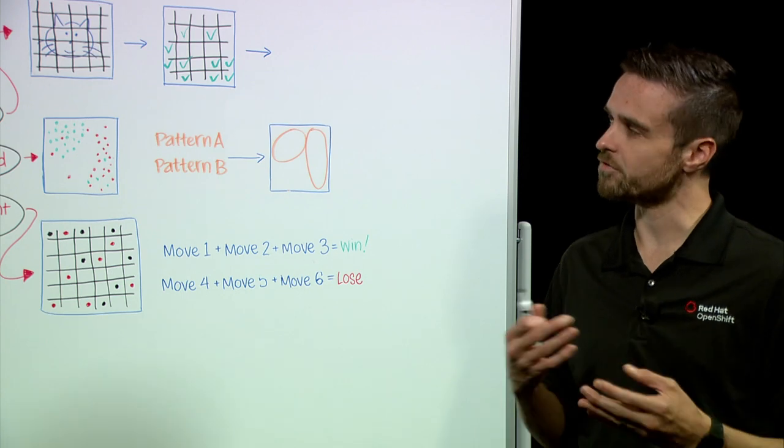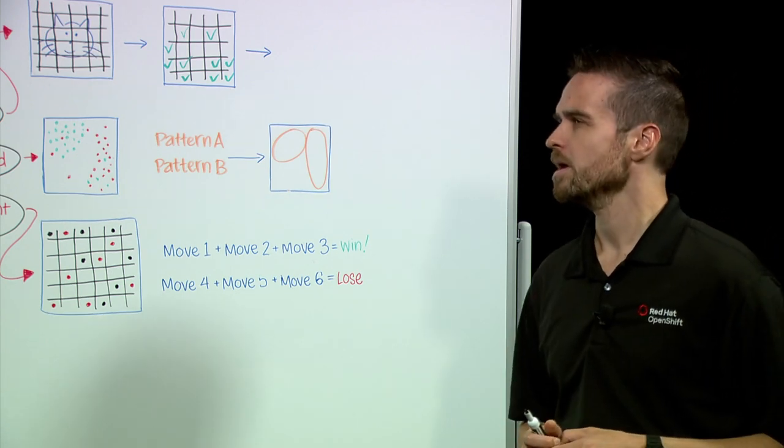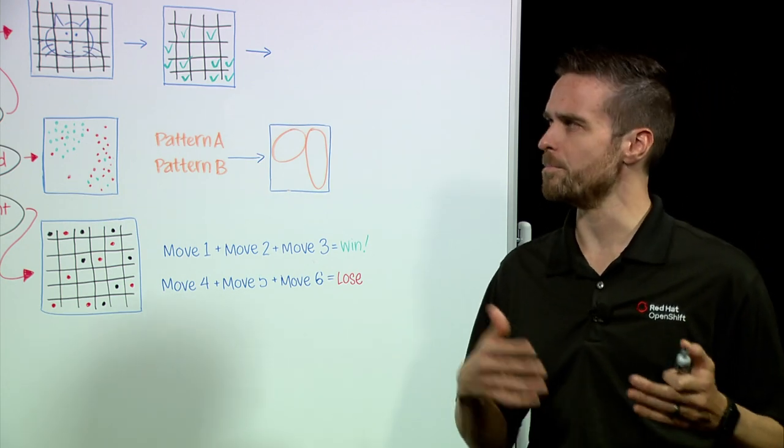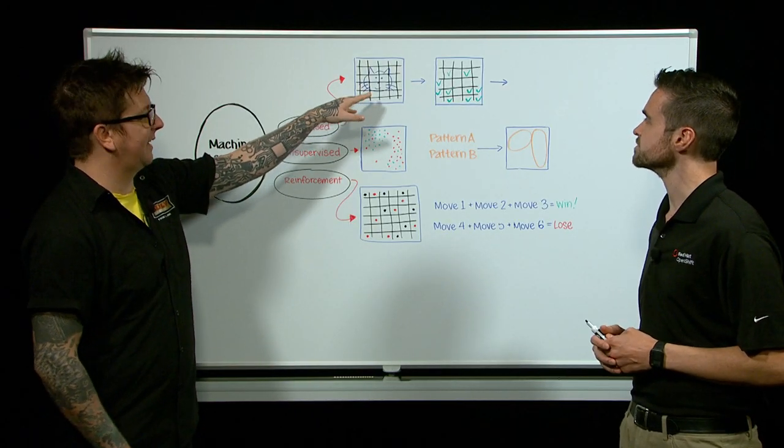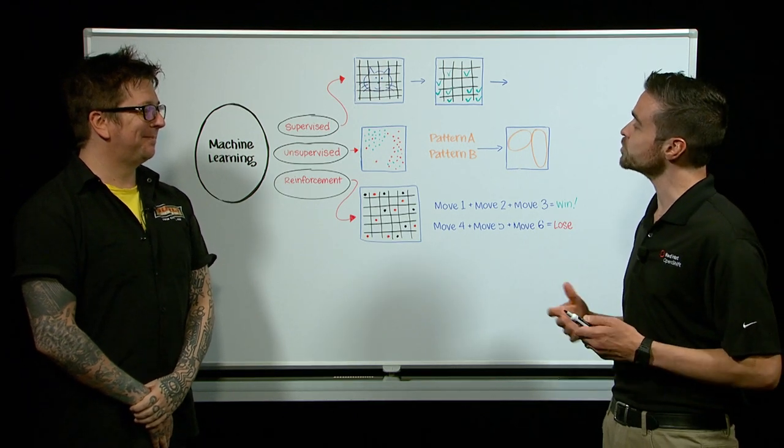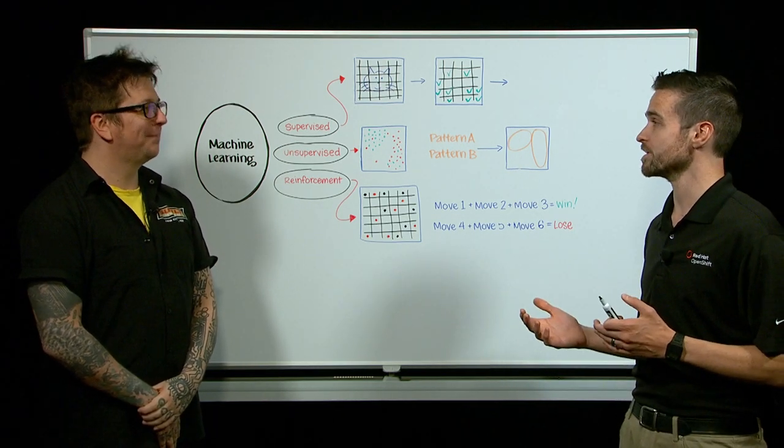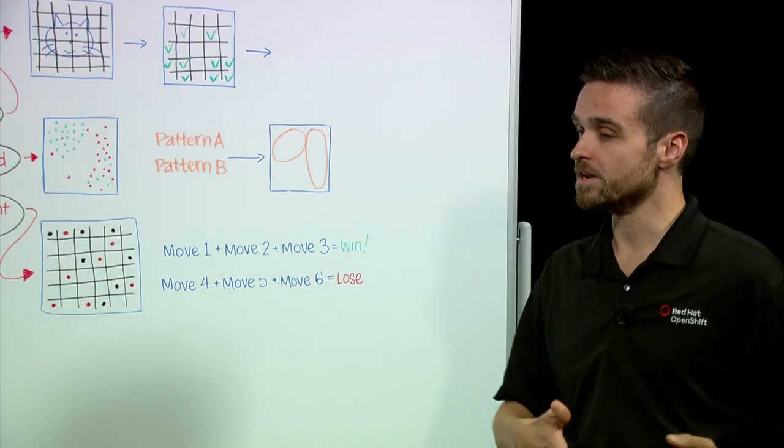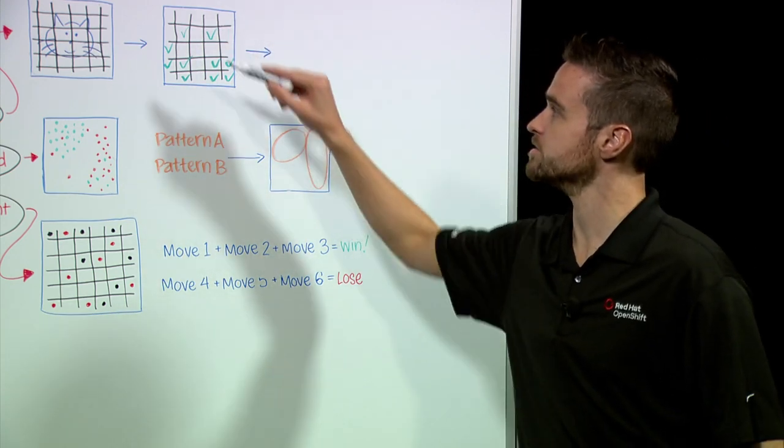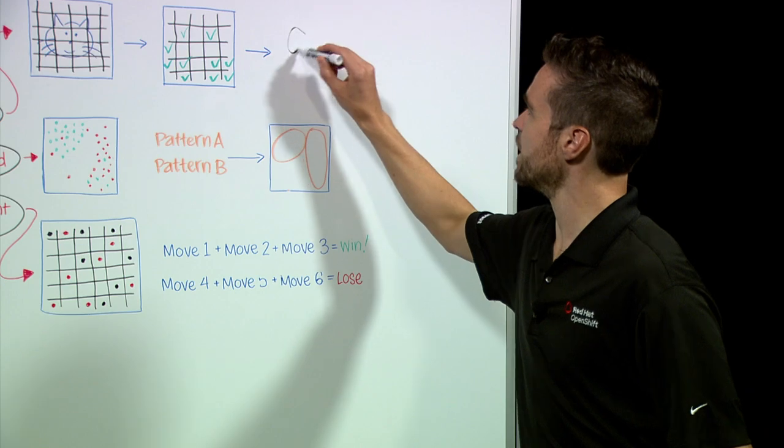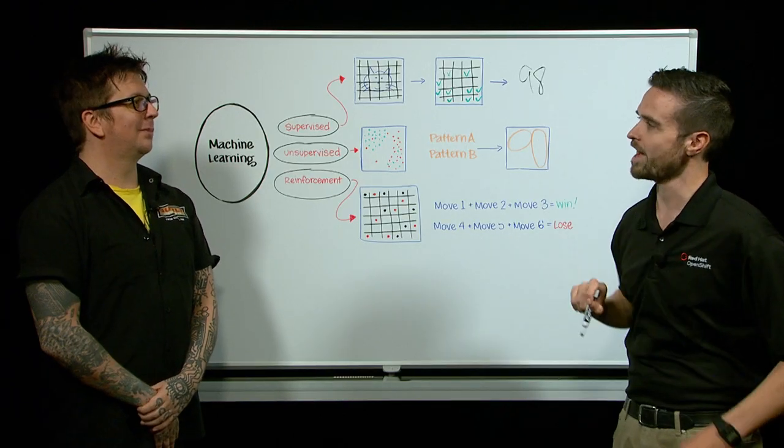Sure. So supervised learning is the first of three types of machine learning, and that's where a computer is able to identify math to map known inputs to known outputs. Excellent. I see a little drawing of a kitty cat here. Can you talk about him? Sure. So supervised learning is used commonly in image recognition applications, so I can feed it a lot of known pictures of kitty cats, and I can go in and say, I've identified ears, I know what whiskers look like, I am 98% sure, that is a cat.